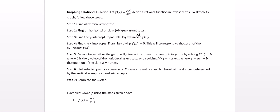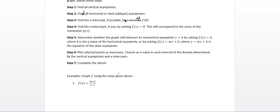Step five, determine whether the graph will intersect its non-vertical asymptote by solving to see if it's going to cross its slant asymptote. We can cross the horizontal and the slant asymptotes, but we will not cross vertical asymptotes. Then we'll plot as many points as necessary. So let's see if we can follow these steps.